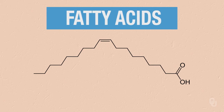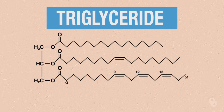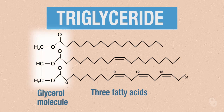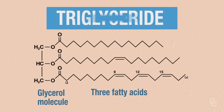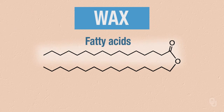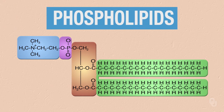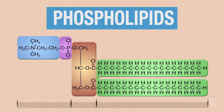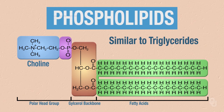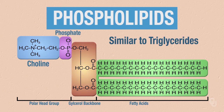The fatty acids are part of the triglycerides. Triglycerides will have a glycerin molecule with three fatty acids attached. A wax is going to be a fatty acid and a long chain alcohol. Our phospholipids are often very similar to our triglycerides, but there's going to be a phosphate group. These are important in membranes, so phospholipid membranes are important to cell walls.